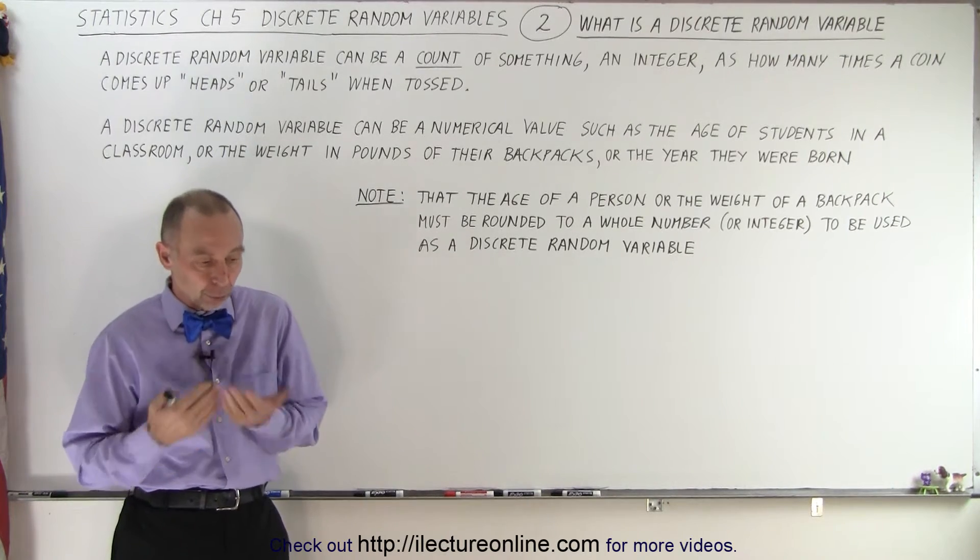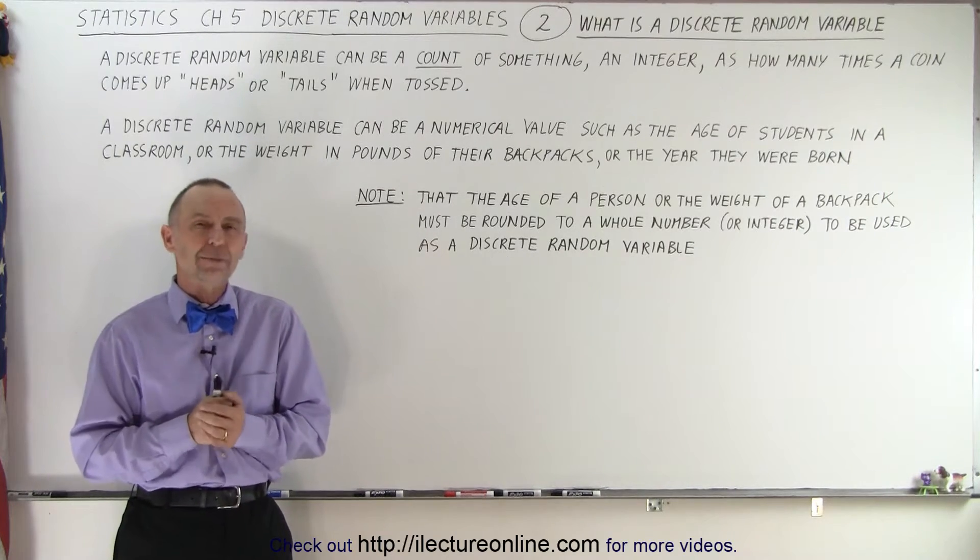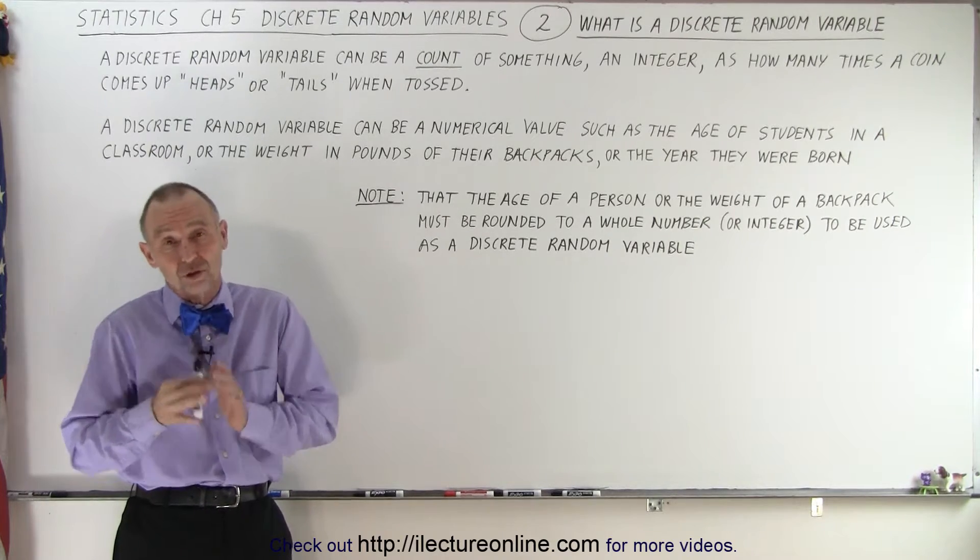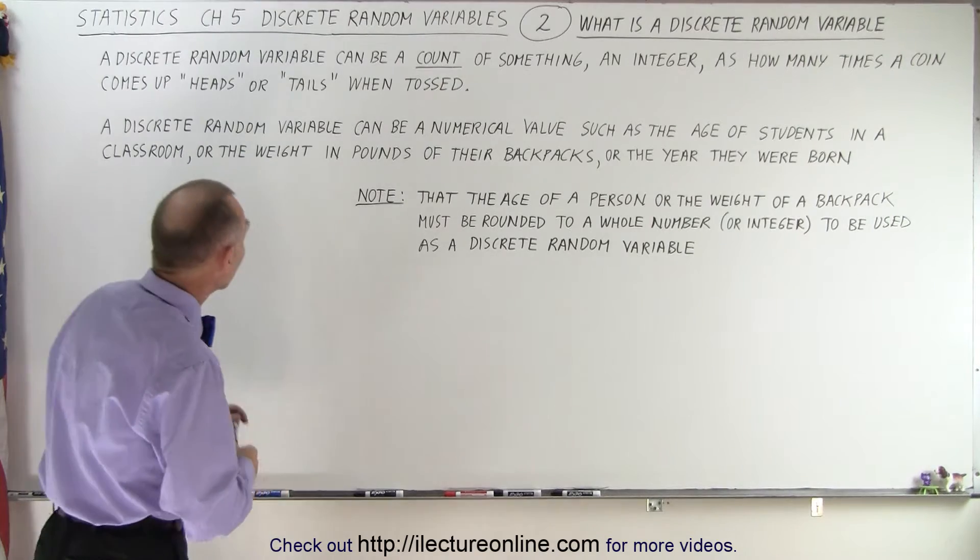It's still a random variable. In other words, we cannot predict the outcome of any one event. But what makes it discrete? There are several ways in which a discrete random variable can be defined. One of them, the most typical way,